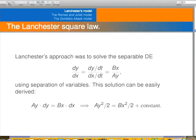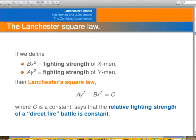Lancaster's approach was kind of clever. He decided, why don't we divide those two equations by each other. Then using the chain rule, we'll get a separable differential equation. We can solve it pretty easily. And that's what is done here. This is called the Lancaster Square Law. Sometimes the term B-X squared is called the fighting strength of the X-Men and A-Y squared is called the fighting strength of the Y-Men. So this says that the relative fighting strength is a constant. It's the Lancaster Square Law.